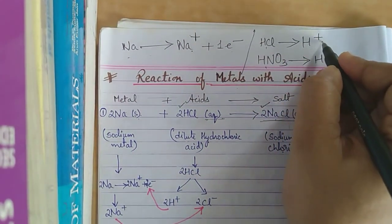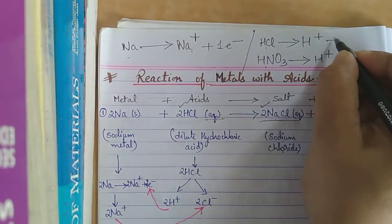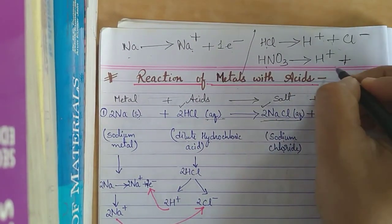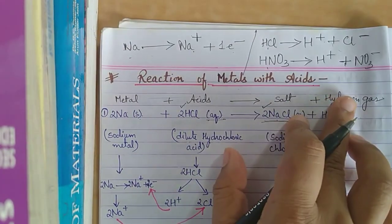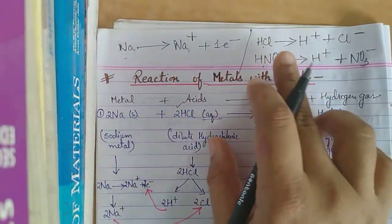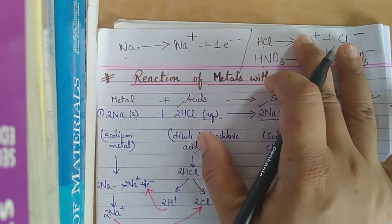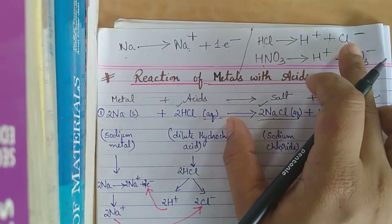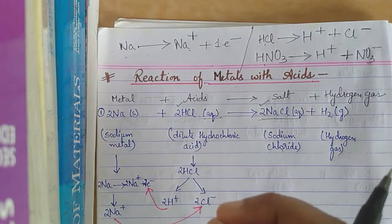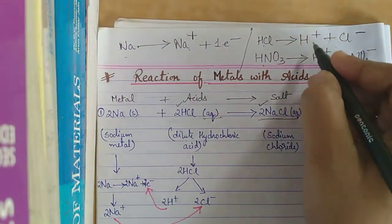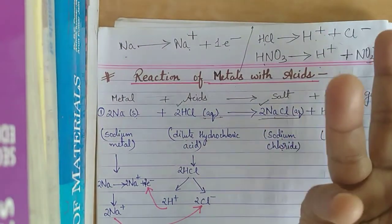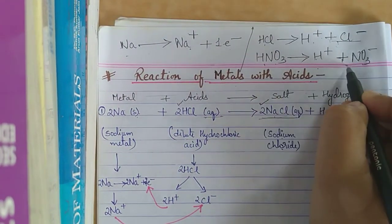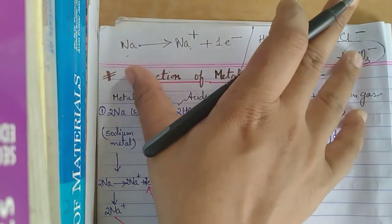When HCl releases H⁺, what remains is Cl⁻. When HNO₃ releases H⁺, what remains is NO₃⁻. So in any acid there are two parts: the positive H⁺ ion and a negative anion. When acid is added to water, it releases H⁺ — leaving Cl⁻ or NO₃⁻.